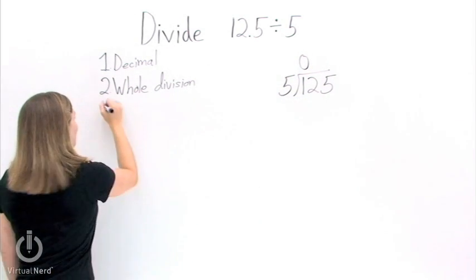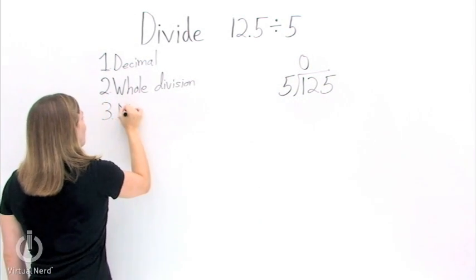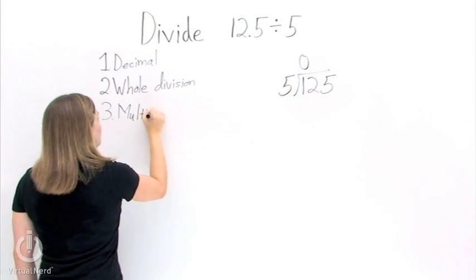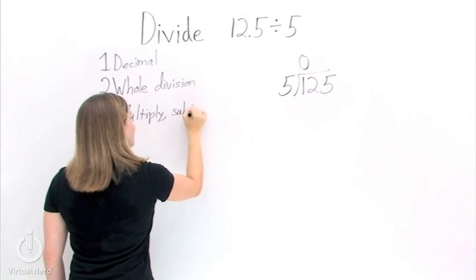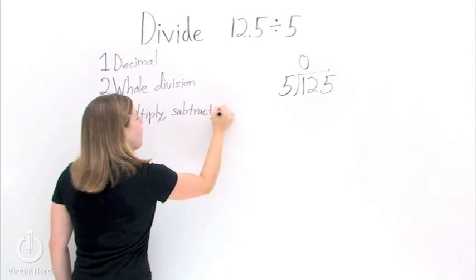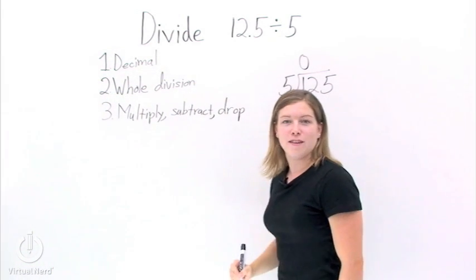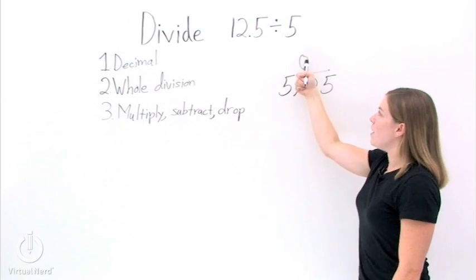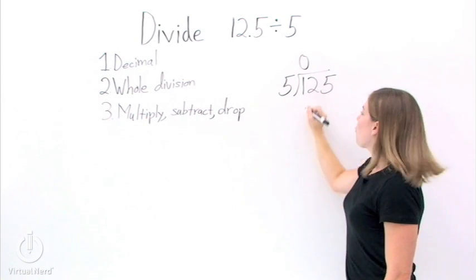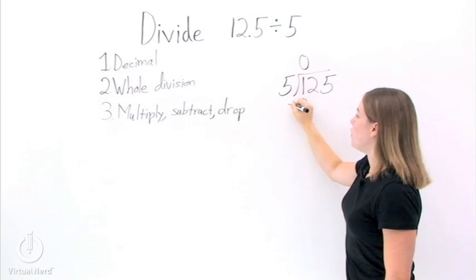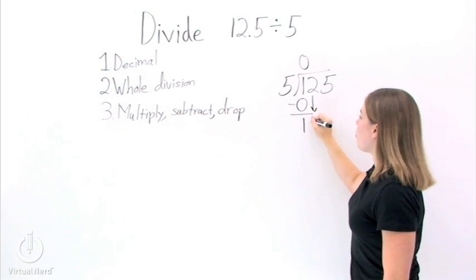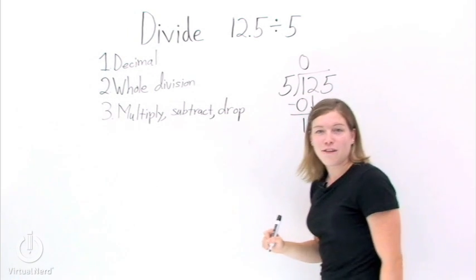Now we can go to step 3. Step 3 is our multi-step process. This is where we multiply, subtract, and then drop or bring down the next digit in our dividend. So let's do that. We take 0 times 5, write that answer right below the first digit of the dividend. Subtract it, bring down our next digit, and we have 12.